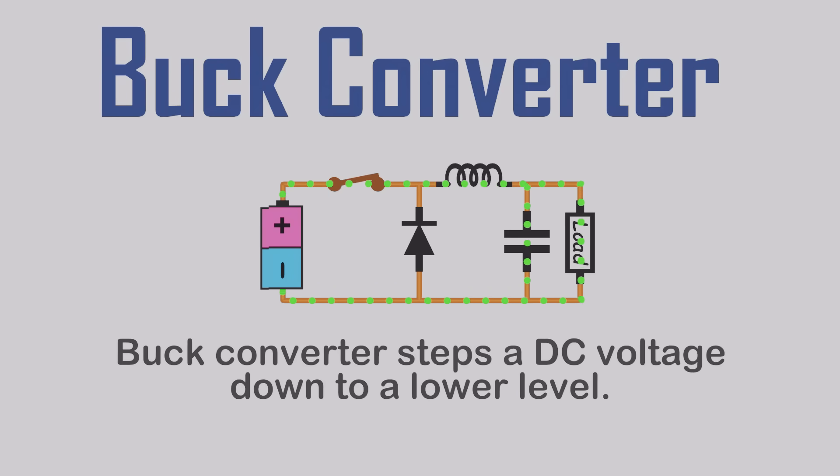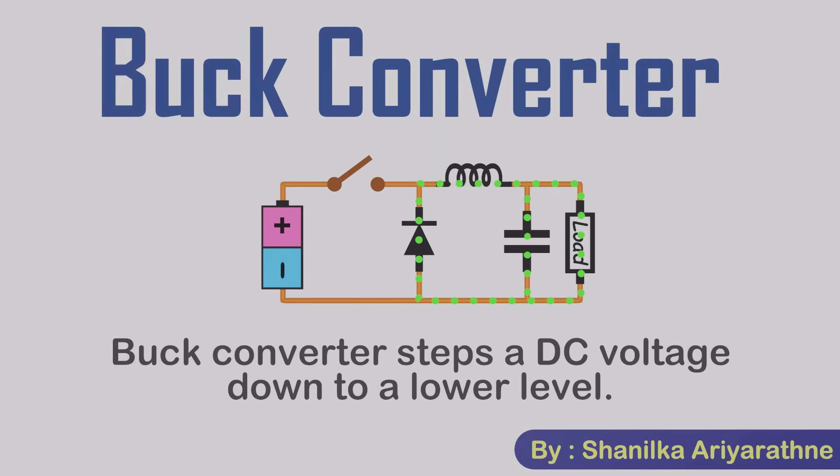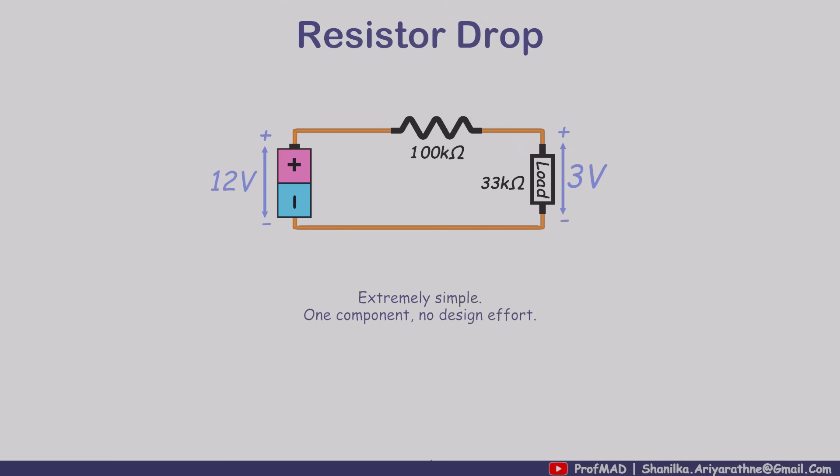A buck converter is a type of circuit that steps down DC voltage, taking a higher voltage and turning it into a lower one. For example, you might step 12 volts from a car battery down to 3 volts to safely power an LED. Now you might be wondering, why not just use a simple voltage divider?